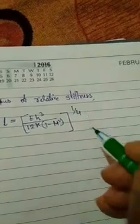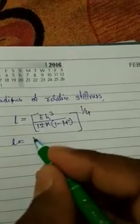It is the formula for radius of relative stiffness. Here L equals to radius of relative stiffness and its unit in centimeter.